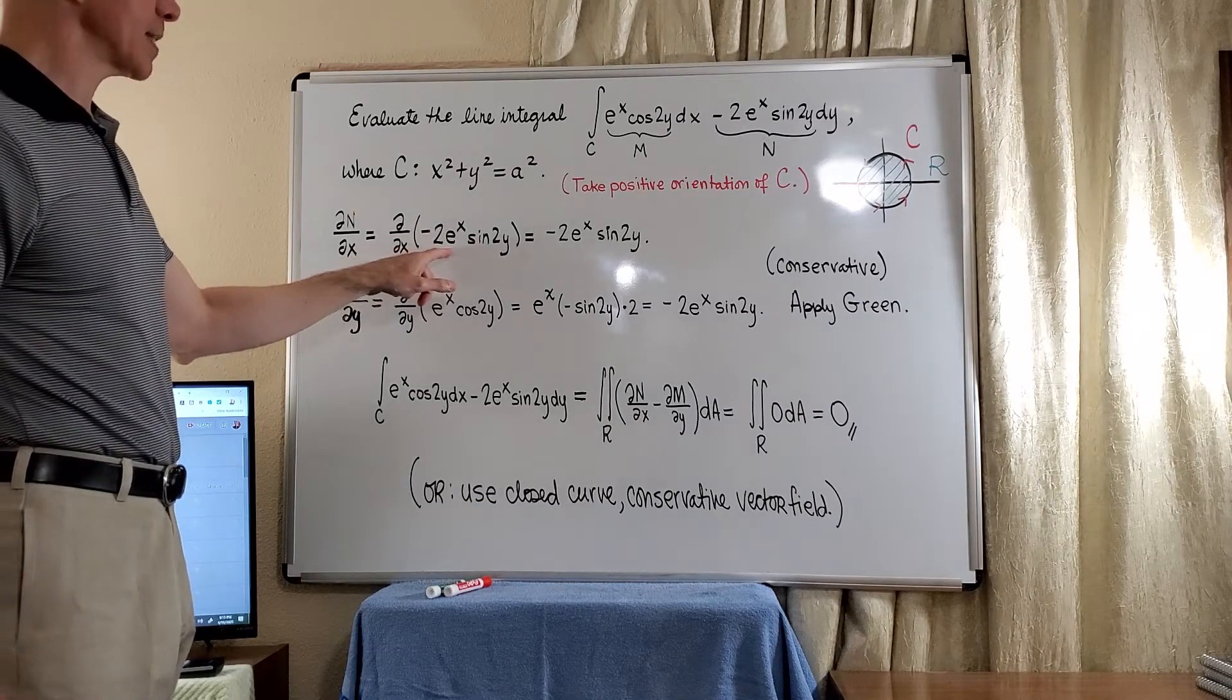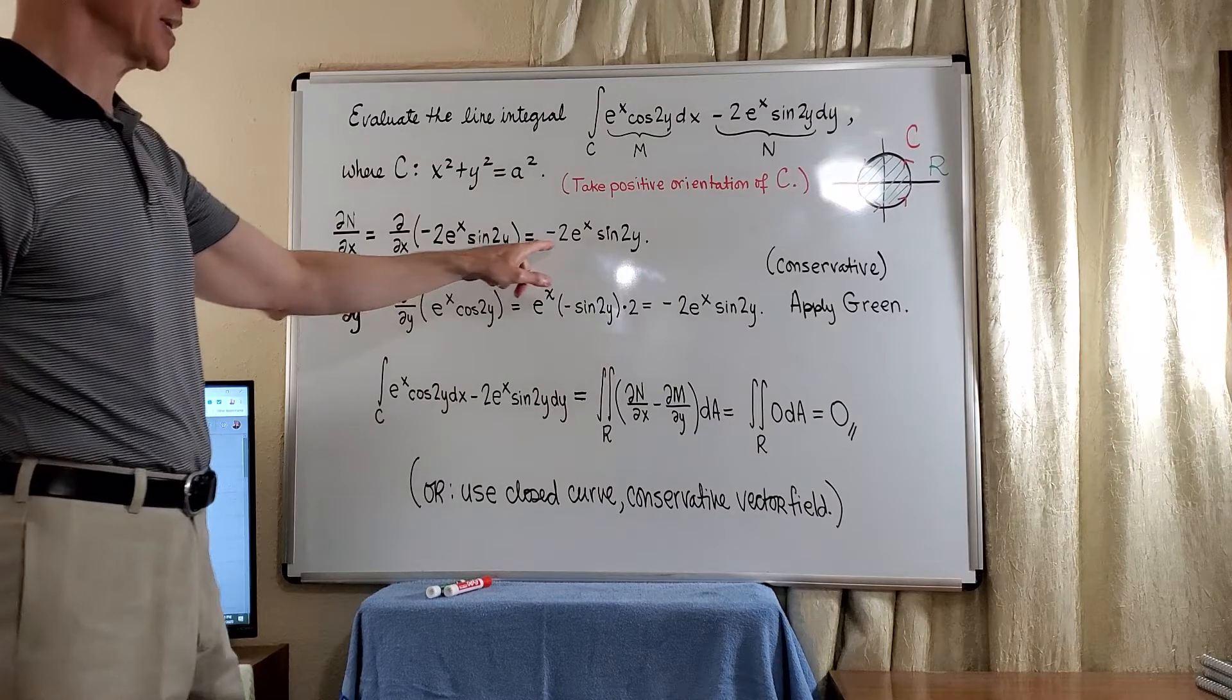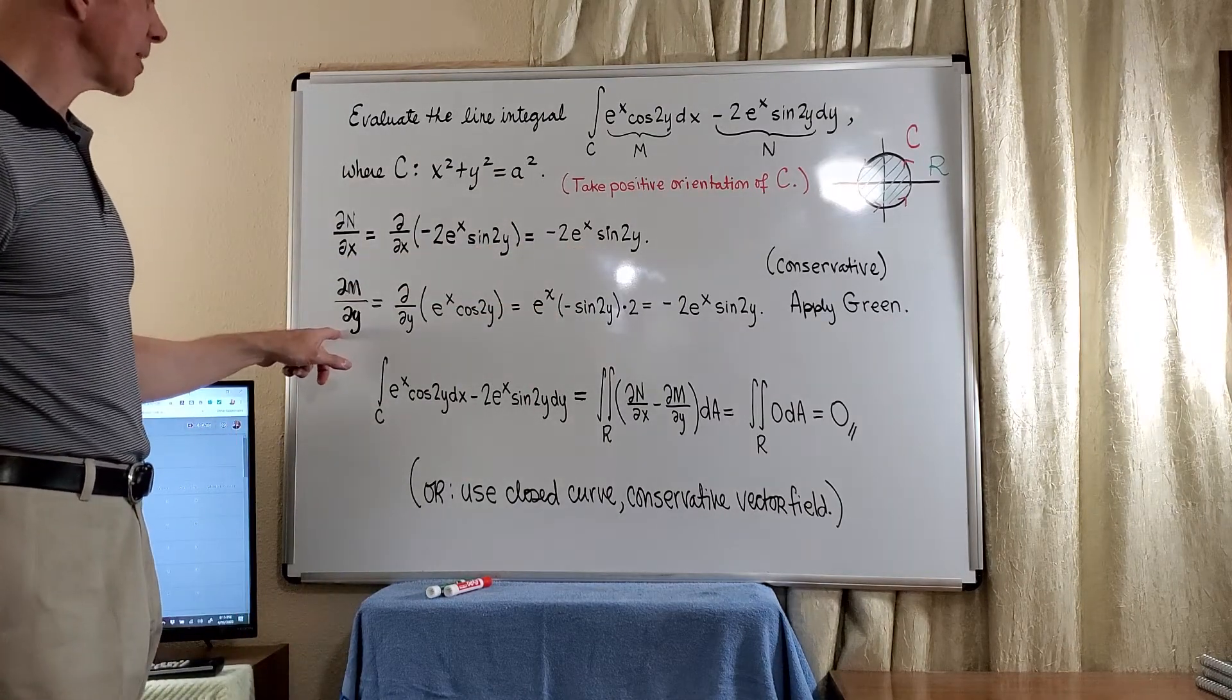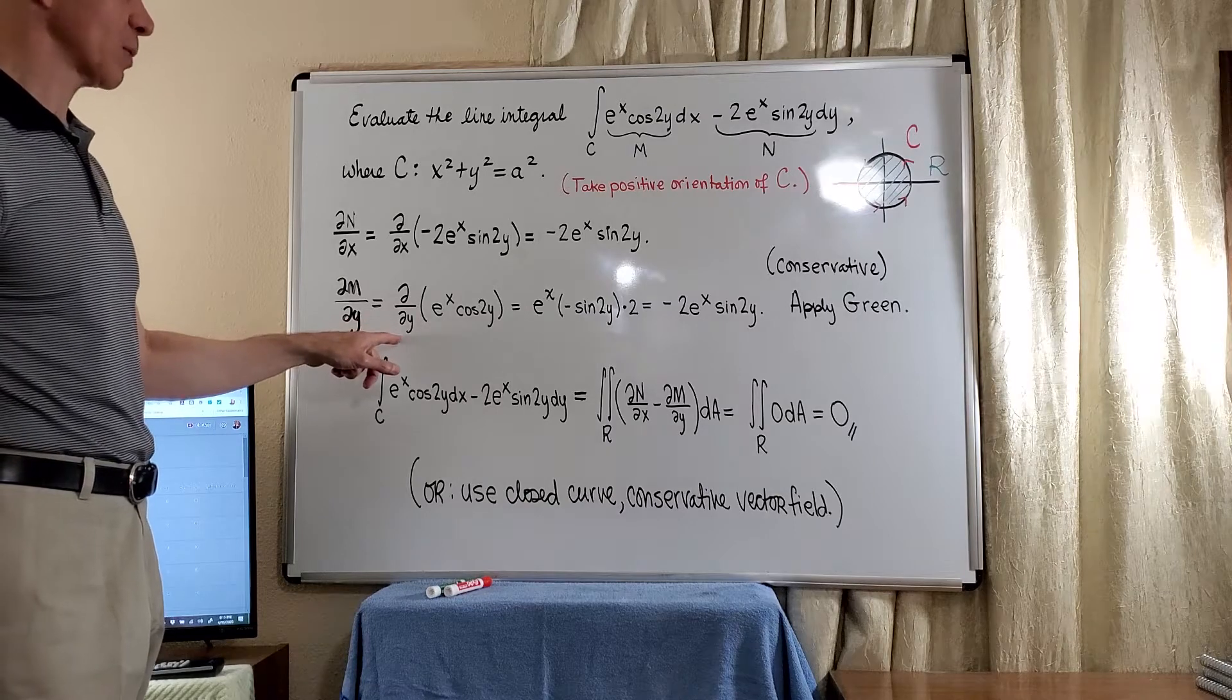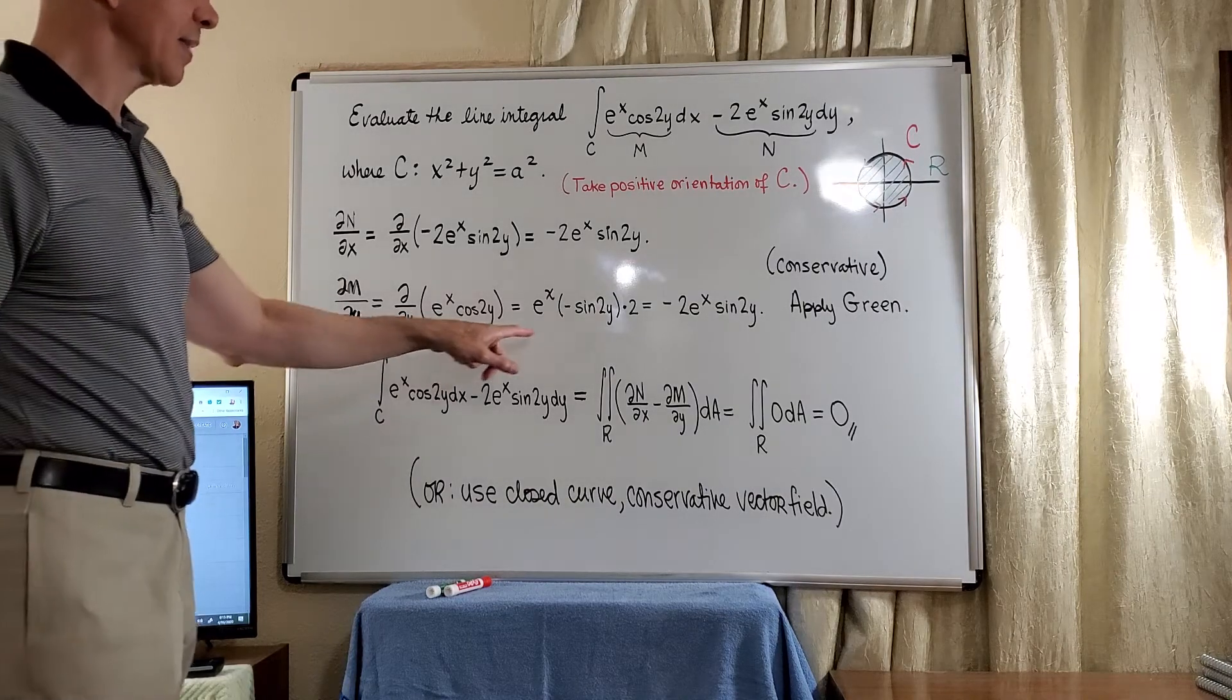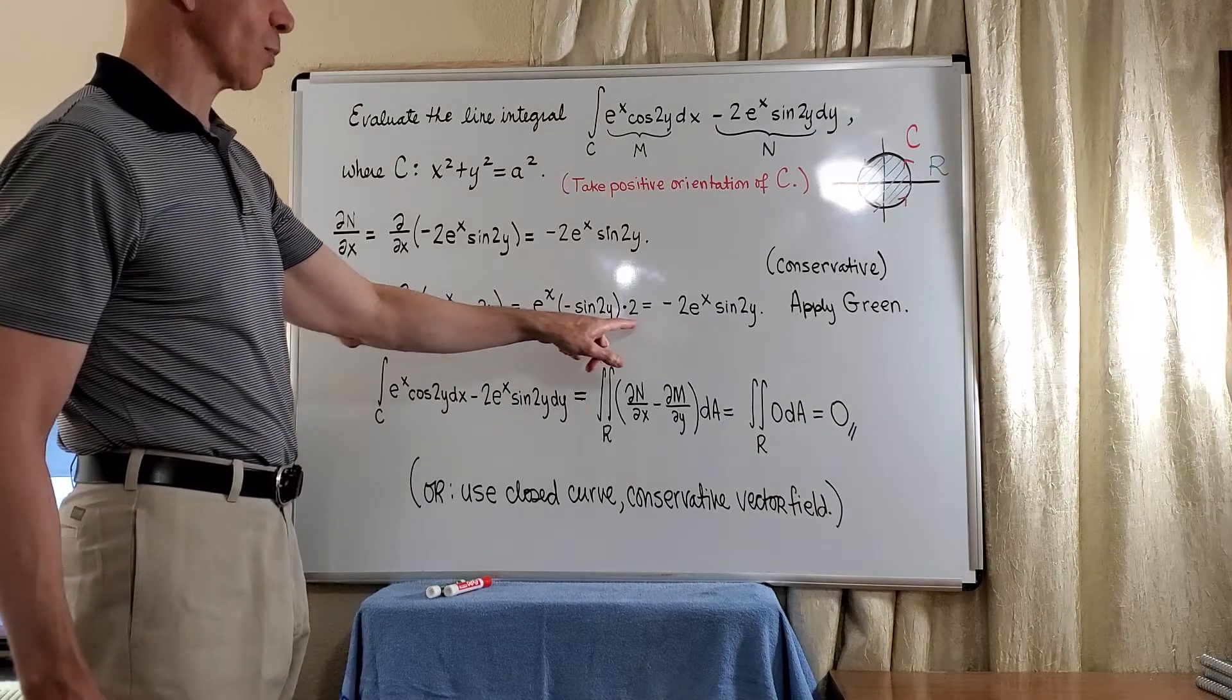So we have the partial of n with respect to x. We're just differentiating e to the x, so we get negative 2e to the x sine 2y. And then we have the partial of n with respect to y. So we have to differentiate the cosine 2y. That gives us a negative sine 2y times 2.